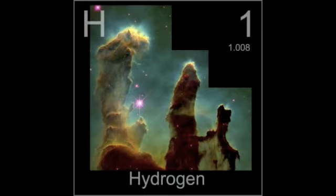Hydrogen is the chemical element with atomic number 1. It is represented by the symbol H. At standard temperature and pressure, hydrogen is colourless, odourless, non-metallic, tasteless, highly flammable diatomic gas with the molecular formula H2.